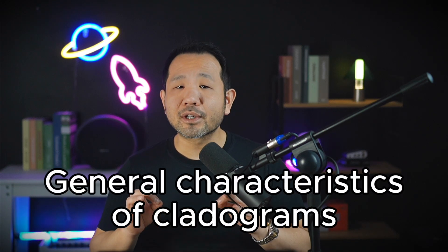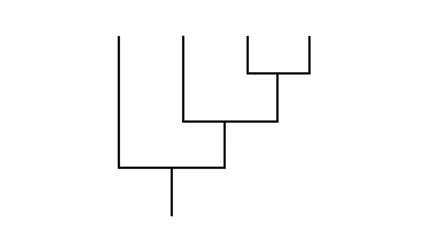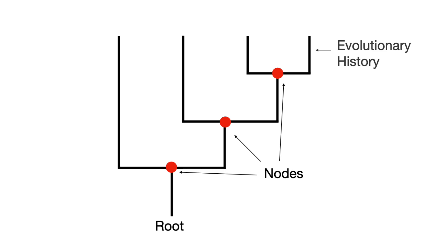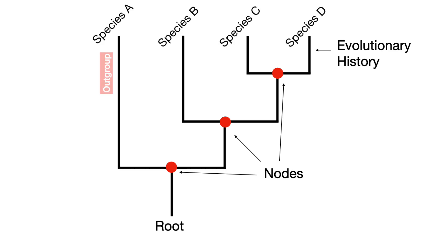Let's talk about the general characteristics of cladograms, starting with terms associated with the different parts of the cladogram. In every cladogram, there is a root that indicates the most ancestral species that gave rise to all of the species represented within the tree. Nodes indicate relatively more recent ancestors that lead to branches. These branches represent a unique history of what eventually exists at the tip, which are the daughter species. We also have an outgroup, which is the species that branch from the most outer portion of our cladogram.